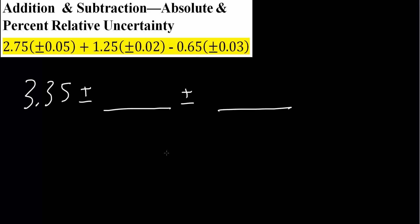To calculate the absolute uncertainty, we do this for addition and subtraction. Since all of our terms involve addition and subtraction, it's fairly easy. It's going to be 0.05, we square that number, plus 0.02, we square that number,